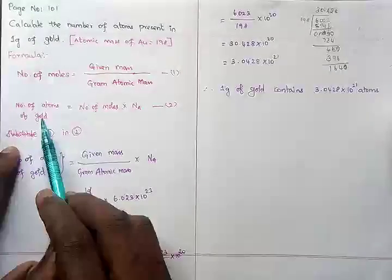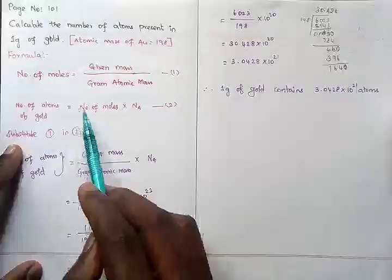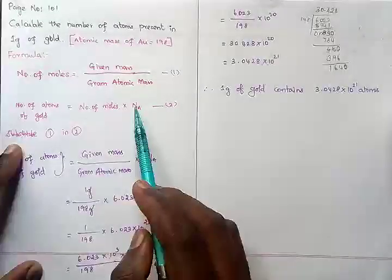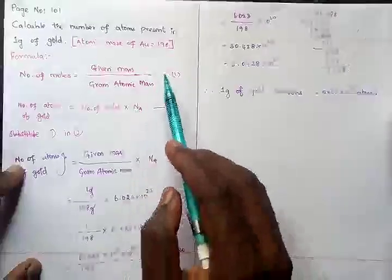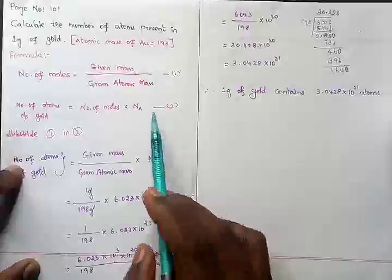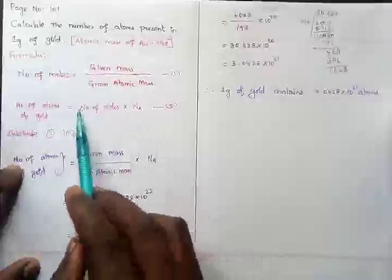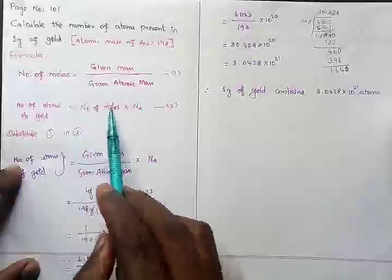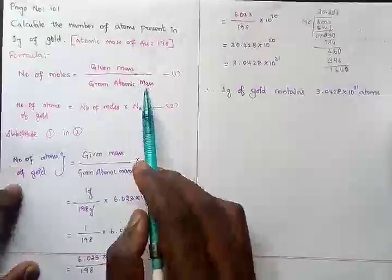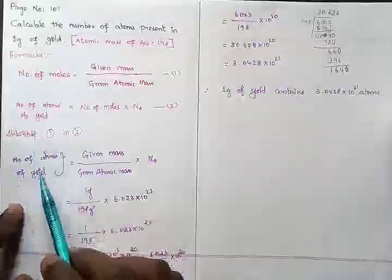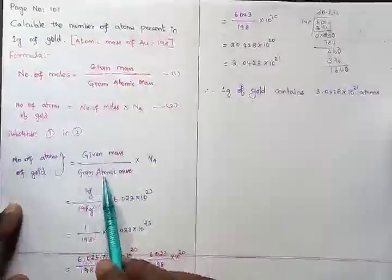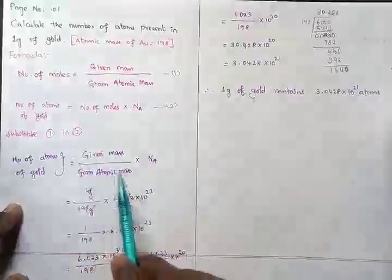After calculating the number of moles, we want to calculate the number of atoms. The number of atoms = number of moles × Avogadro's number. This is Formula 2. Now substitute Formula 1 into Formula 2, replacing number of moles with (given mass / gram atomic mass).